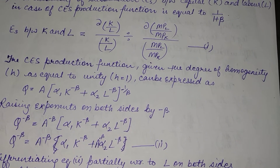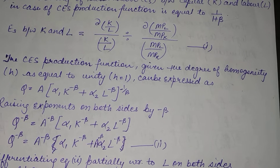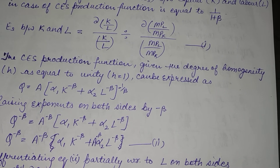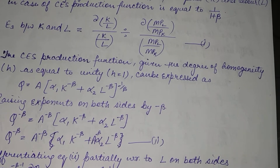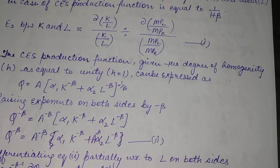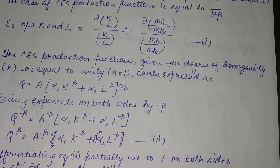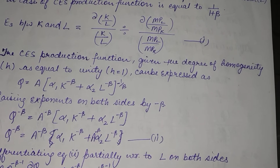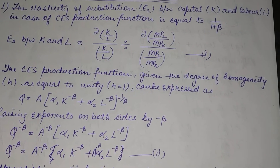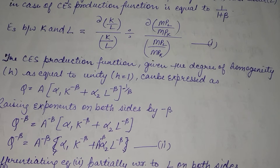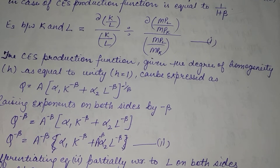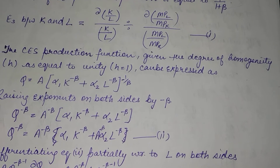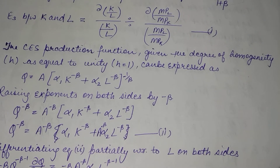Now raising the exponents on both sides by −β, or multiplying both sides by exponent −β, the equation becomes: Q^(−β) = A^(−β)[α₁K^(−β) + α₂L^(−β)]. When we multiply A^(−β) into the bracket, the bracket opens and the equation takes this expanded form. State this as equation 2.